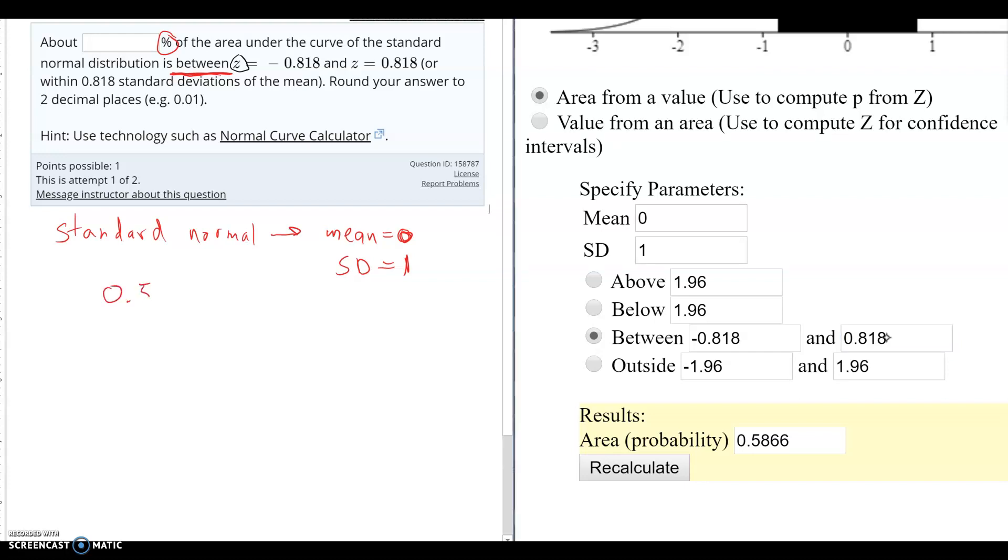So 0.5866. Then I have to do times 100 to convert it to a percent. That's going to give me 58.66%. I want to make sure I don't type in the percent sign.